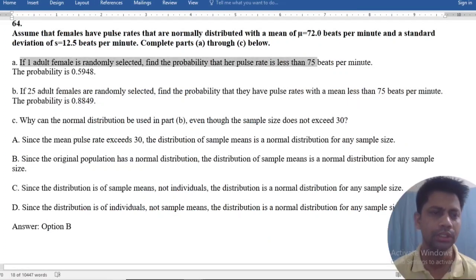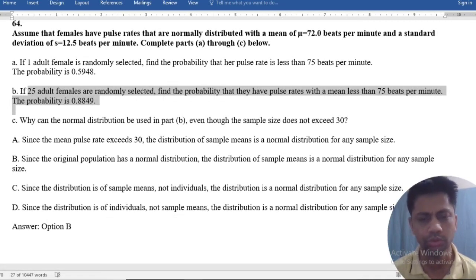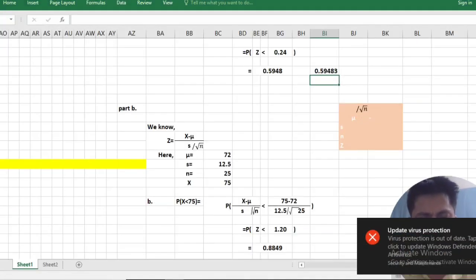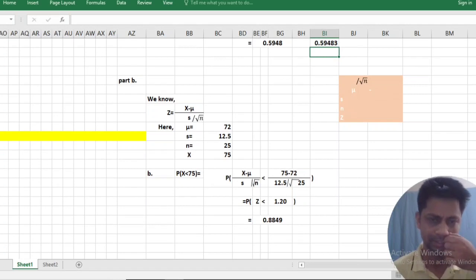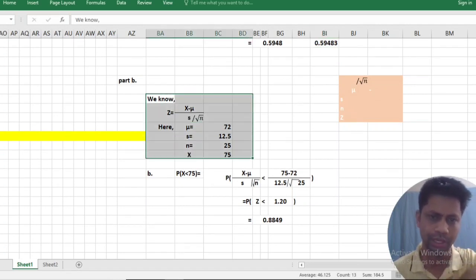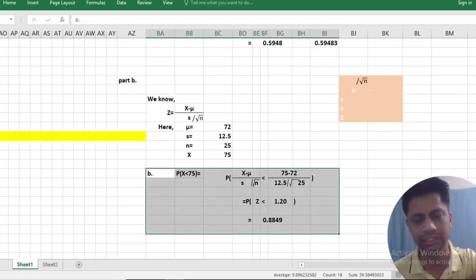Now, if 25 adults are randomly selected, then what can we do? We do that this. Here, n is equal to 25. So our solution is here.